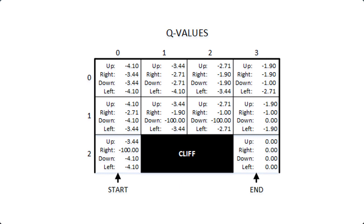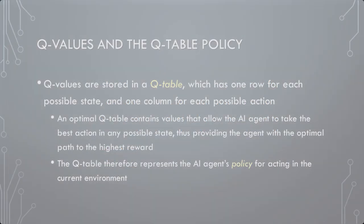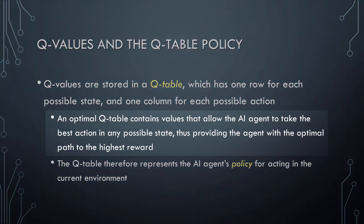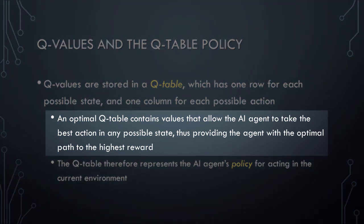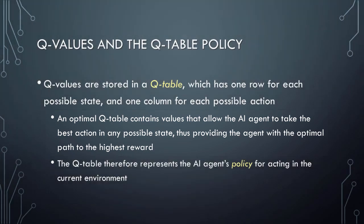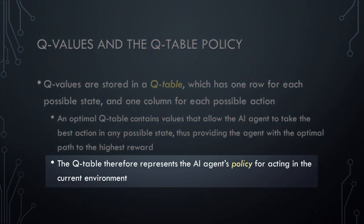As you can see, the Q table has one row for each possible state and one column for each possible action. The Q values themselves represent our current estimates of the sum of all future rewards if we were to take a particular action in a particular state at this moment in time. In this example, all of the non-cliff Q values are negative, except for the target location which has the highest possible Q value of 0. An optimal Q table will contain values that allow the AI agent to take the best action in any possible state, thus providing the agent with the optimal path to the highest reward. The Q table therefore represents the AI agent's policy for acting in the current environment.